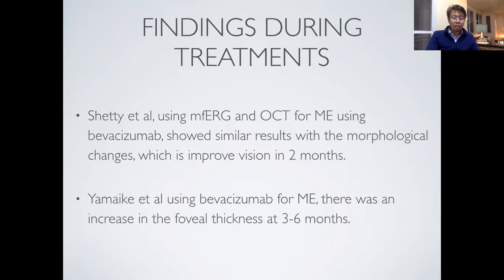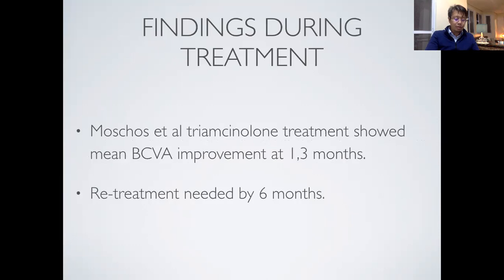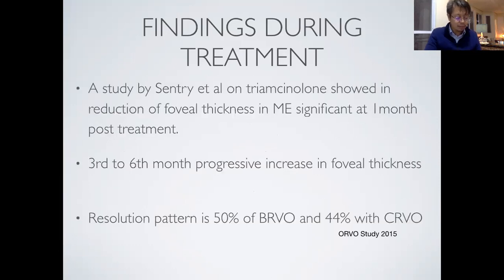Sheth et al., using ERG and OCT for macular edema with bevacizumab, showed morphological improvements and improved vision at two months. Yamaike et al., using bevacizumab for macular edema, found an increase in foveal thickness at three to six months, correlating with Sheth et al.'s findings of improved vision at two months but decreased vision by three months. Moshoes et al. found triamcinolone treatment showed BCVA improvement at one to three months; however, retreatment was needed by six months. Center et al., using triamcinolone acetonide, showed reduction of foveal thickness significant at one month post-treatment, with progressive increase in foveal thickness from three to six months. There was a resolution pattern of 50% in BRVO and 44% in CRVO.